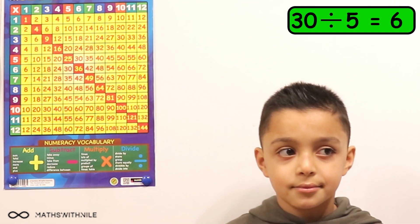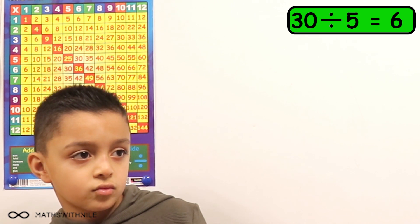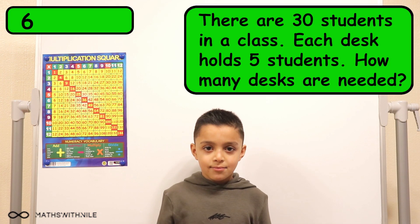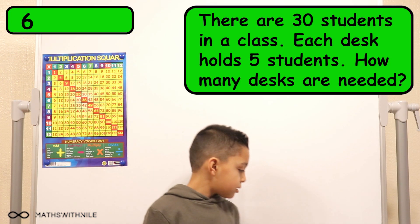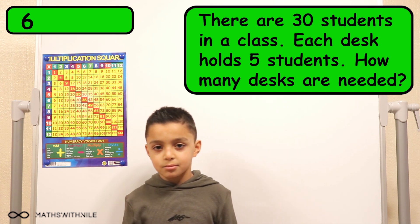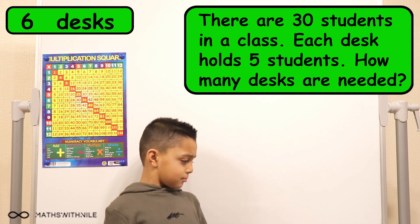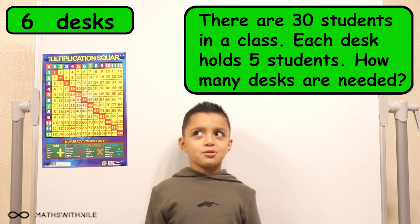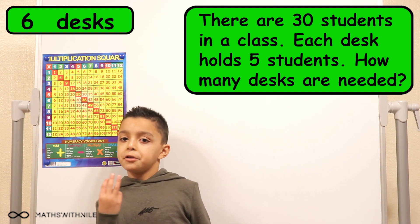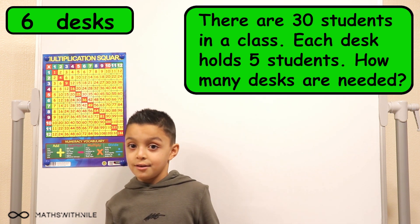So how would you answer this question in a worded answer? 6. 6 what? 6 students. 6 students. 6 desks are needed for 30 students. Very good. That's it. Okay.